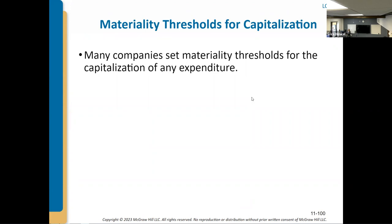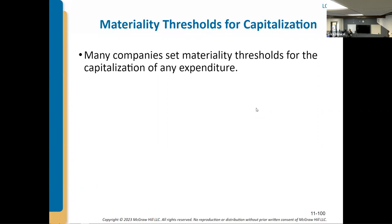The concept of materiality means we only capitalize something if it's big enough to change somebody's decision-making in the long term. Companies set what's called a capitalization threshold. Technically a stapler can last many years — I've bought maybe two staplers in over a decade — but I wouldn't recommend any company capitalize a stapler. How much does a stapler cost? Maybe five bucks, or $20 for a fancy red Swingline. It would cost more than $20 in someone's time to depreciate it.